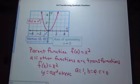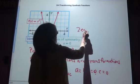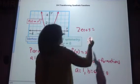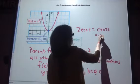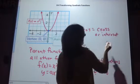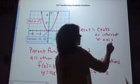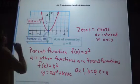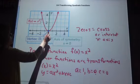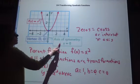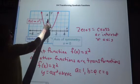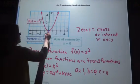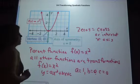Our zeros are where they cross or intersect the x-axis. So we have our parent function f of x equals x squared. Our vertex, our origin, is at (0, 0). Our axis of symmetry is where it separates that parabola in half, which is our x-coordinate. Our zeros are where it crosses or intersects the x-axis. This one has one zero, and it's right there at 0.